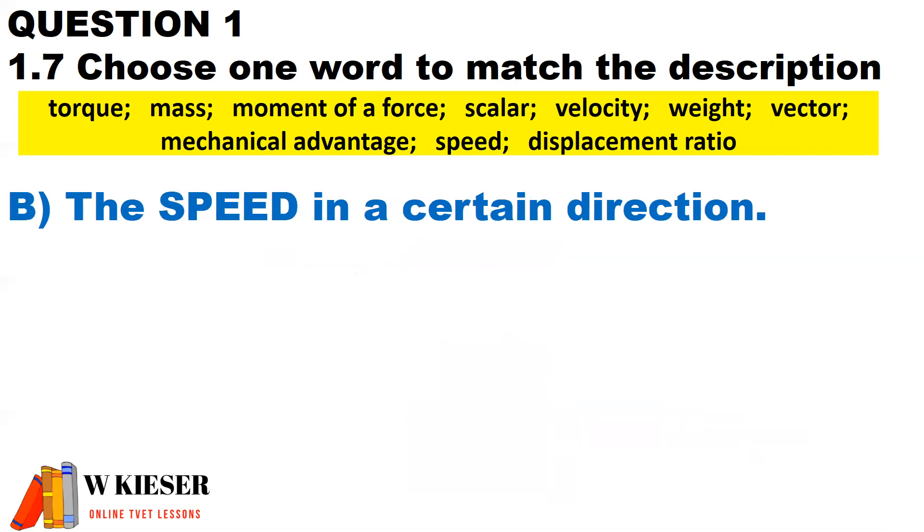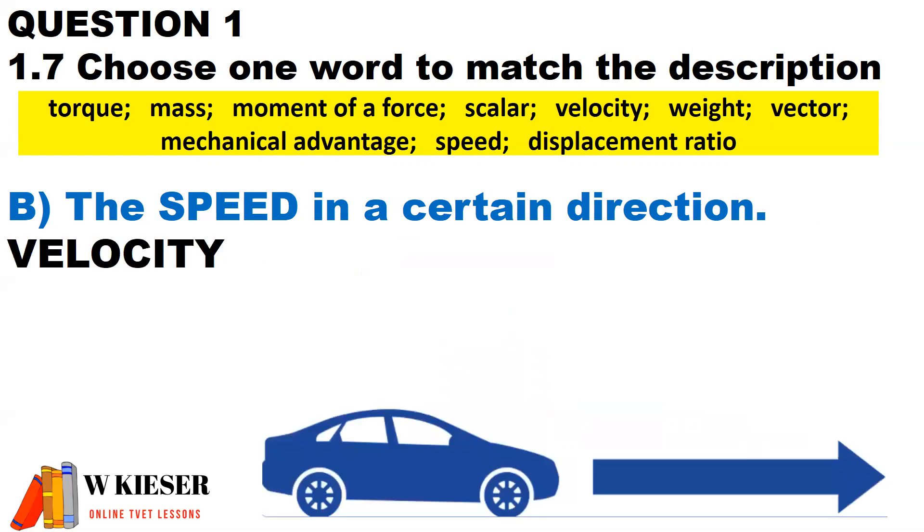In part B, the speed in a certain direction is known as velocity. Here we see there is a motor vehicle and it's traveling a certain speed in a specific direction. Therefore, it's known as velocity.